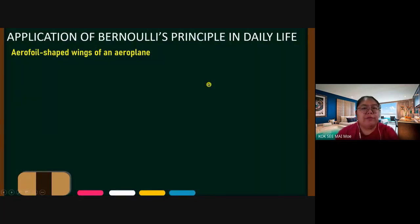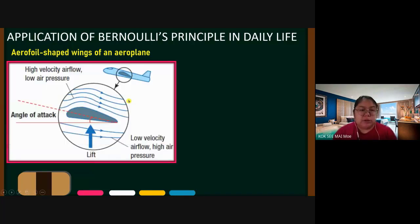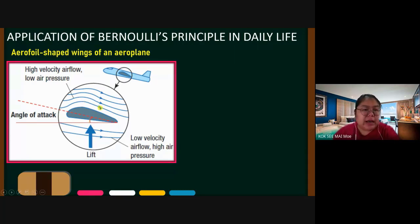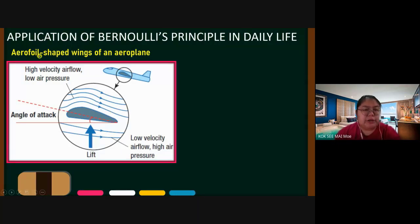Now let's look at applications of the Bernoulli principle in daily life. The first one is the aerofoil-shaped wings of an aeroplane. You can see this shape — we call it aerofoil. It looks like a drumstick shape. The upper part is curved, and the lower part is almost flat.